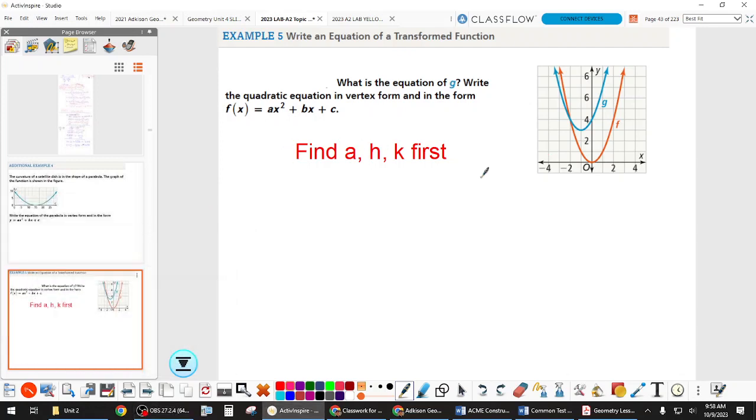So I gave you the hint to find A, H, and K first, and then up here, we know that F is the parent, so we have our vertex, and from there we can find our graphing pattern.